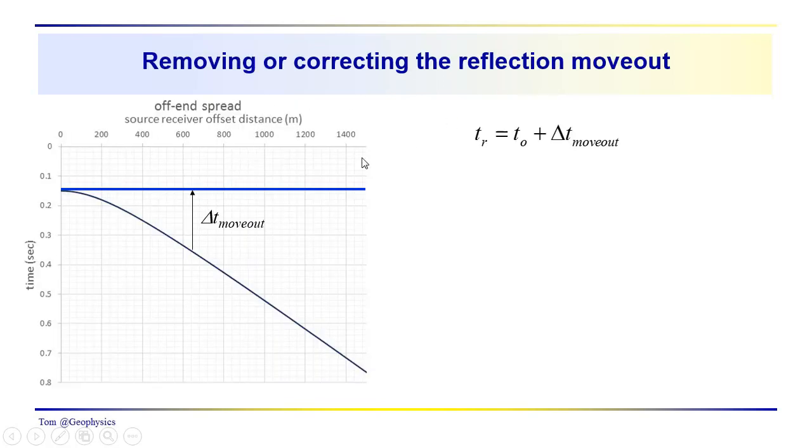So, correcting the reflection move out, this is our move out. This is what we refer to as our move out. This is the difference from the t0 time of the flat reflector in our model. So as we go to different points out along the surface or different reflection point distances, this delta t that we have in here is referred to as the move out.